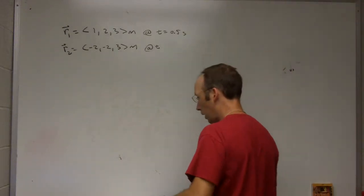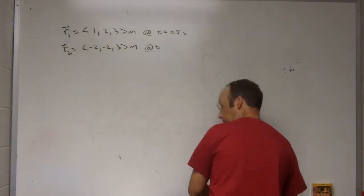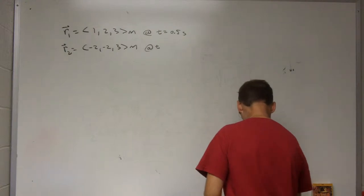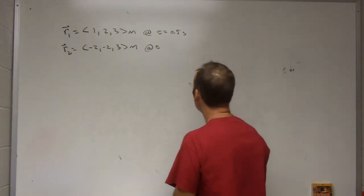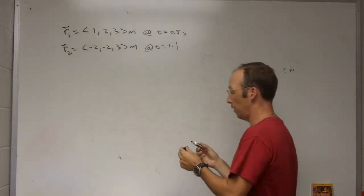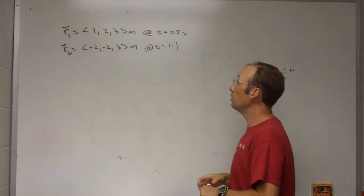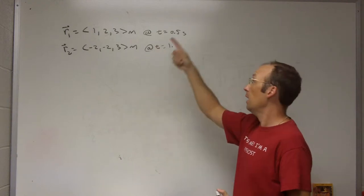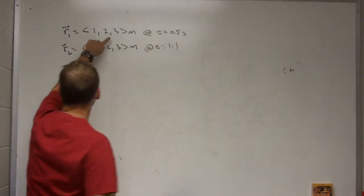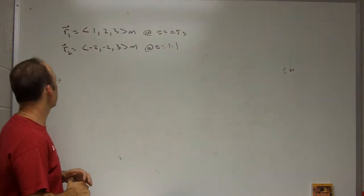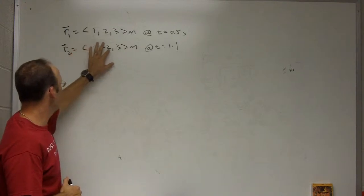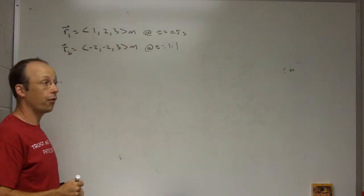Okay, so here is an example problem that I have. Oh, I didn't finish it. Okay, let's just give this 1.1. That's an extra marker. Okay, so suppose that I have some object, and at 0.5 seconds, it's at location 1, 2, 3 meters. Yes, I'm very original. And at time 1.1 seconds, it's at negative 2, negative 2, 3 meters.